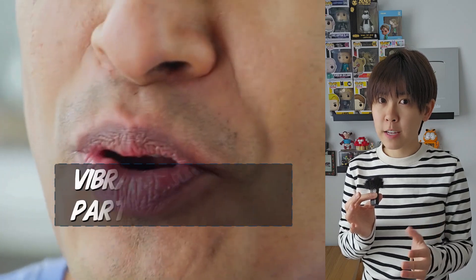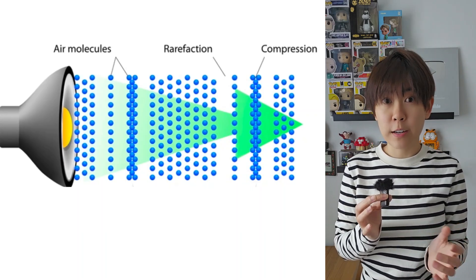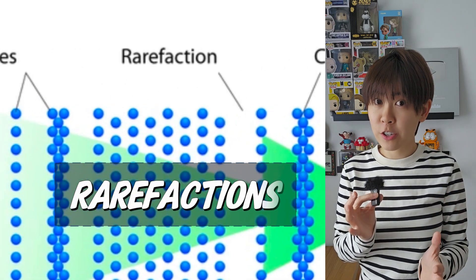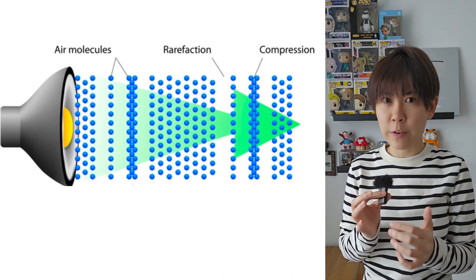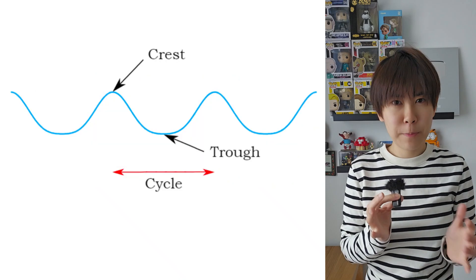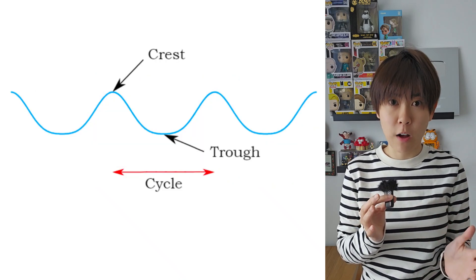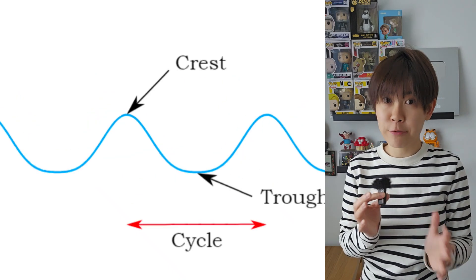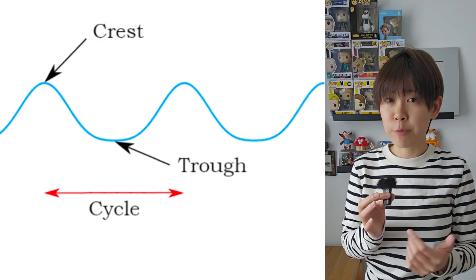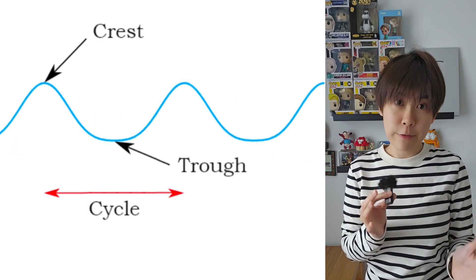Sound waves are created by fluctuations in air pressure, which results in alternating regions of compressions and rarefactions. But to visualize where a sound wave has high and low pressure, it's better to think of a sound wave as having crests and troughs. The crest represents high pressure or compressions, and the troughs represent regions of low pressure or rarefactions.